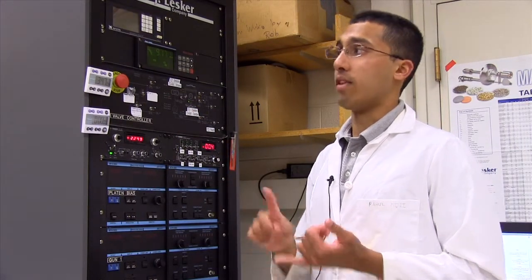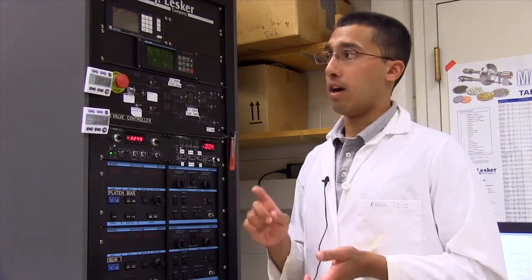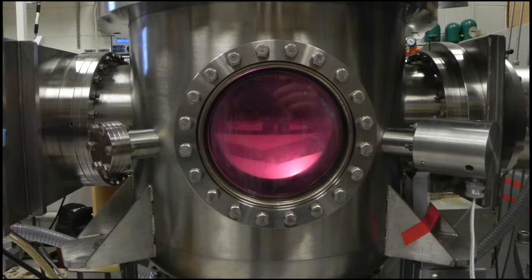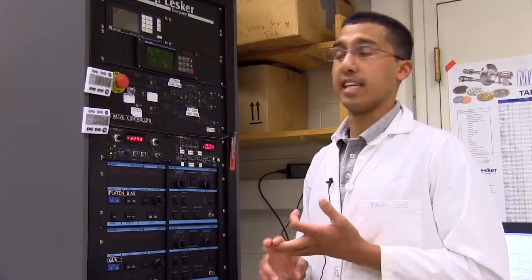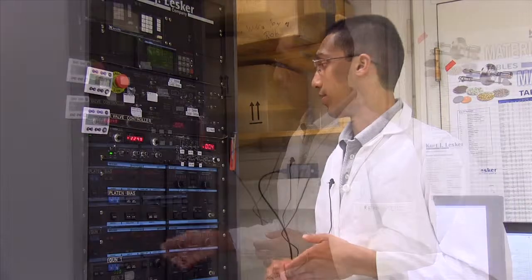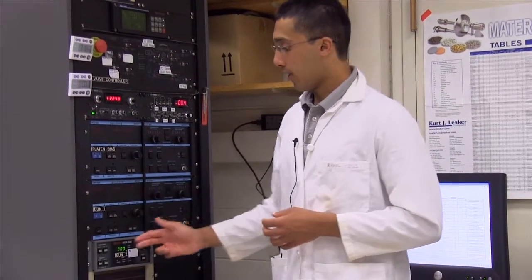In here right now, we have lithium cobalt oxide, which is a cathode, lithium phosphorus oxynitride, which is our electrolyte, and titanium, which is our current collector. We have three panels down here on our system, each referring to a different gun.